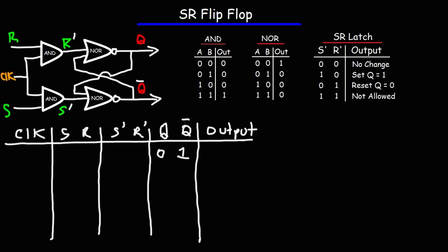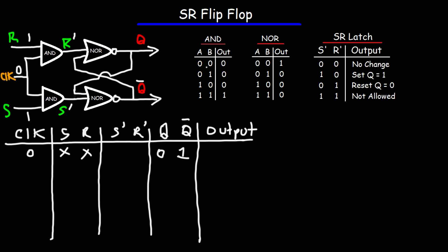Let's begin where the input at the clock is 0. If the clock is 0, it doesn't matter what S and R will be — the output is not going to change. A 0 AND anything will give us an output of 0, so R prime will be 0. Similarly, if S is 0 or 1 with a clock of 0, S prime is also going to be 0. Whenever the clock input is 0, R prime and S prime will both be 0 regardless of the values of R and S.